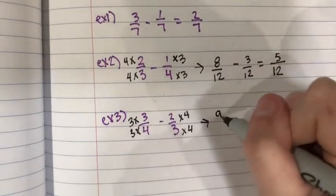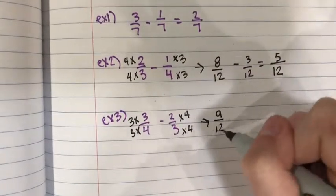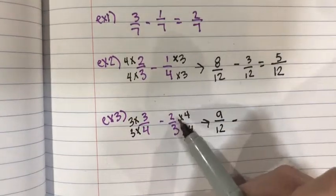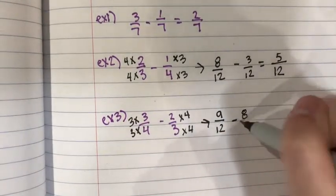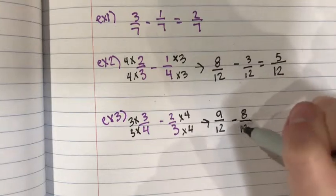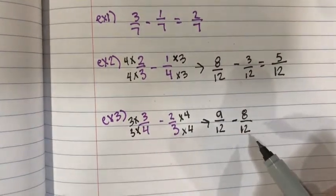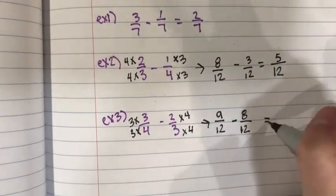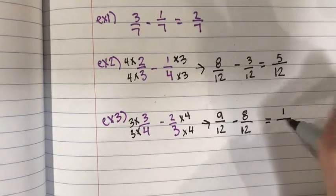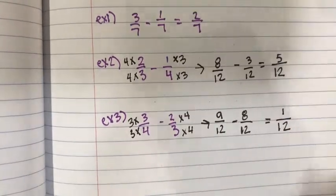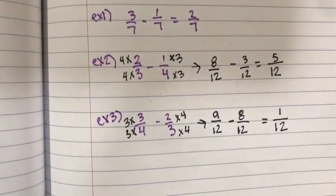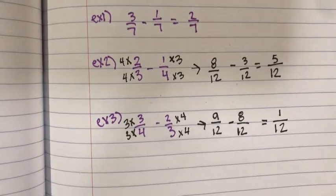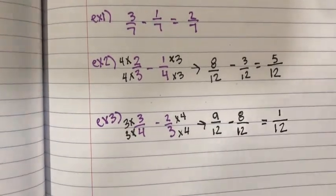So 3 times 3 equals 9, 3 times 4 is 12 minus 2 times 4 is 8 and 3 times 4 is 12. Now you have the same denominator so subtract straight across so 9 minus 8 equals 1 and bring over your 12. So 9/12 minus 8/12 equals 1/12.